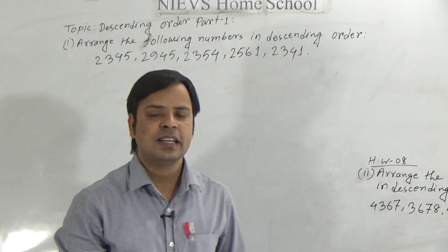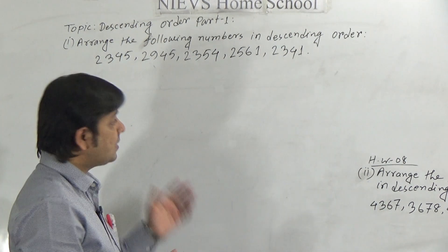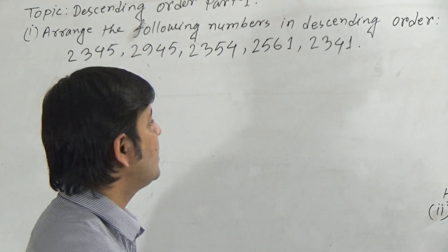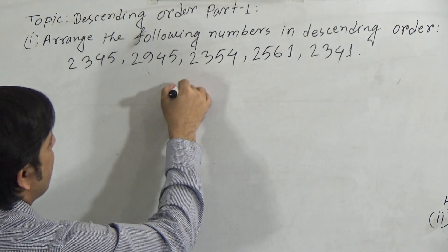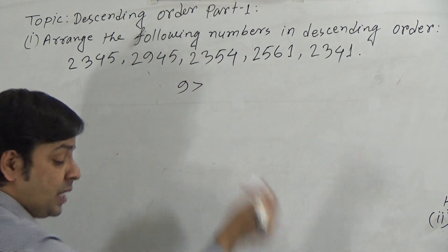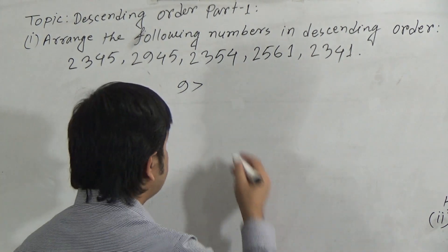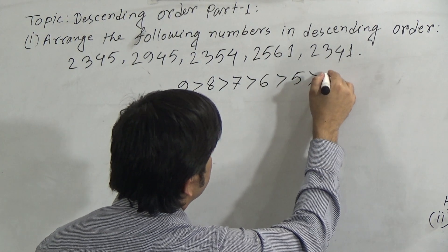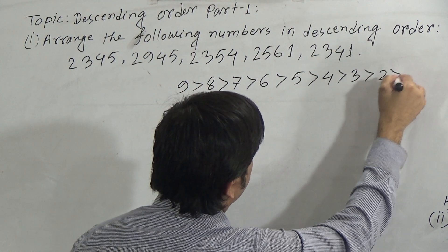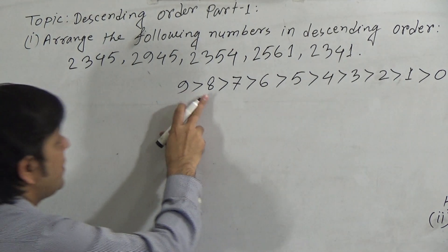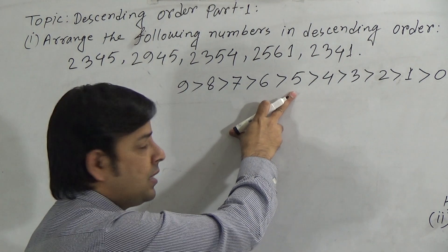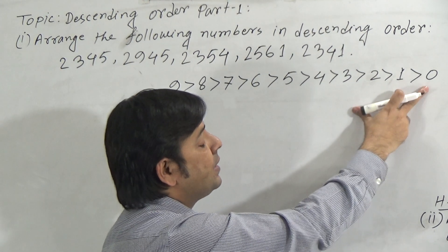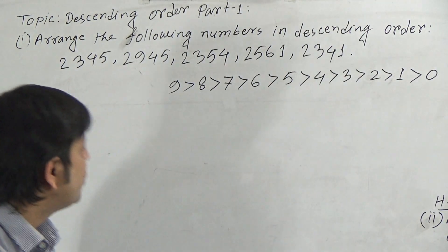To arrange numbers in descending order we have to know the order of the 10 digits. Here, 9 is the highest number, so we write 9 at first. As we arrange from larger to smaller: 9, 8, 7, 6, 5, 4, 3, 2, 1, and at last 0. It means 9 is larger than 8, 8 is larger than 7, down to 1 is larger than 0. We must know this sequence to arrange numbers in descending order.